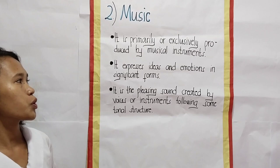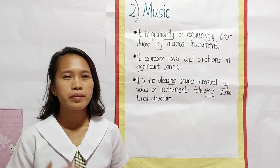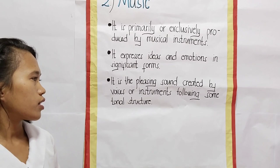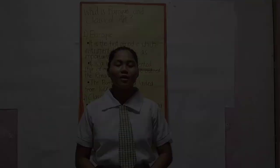Music expresses ideas and emotions in significant forms. For example, when listening to instrumental music, we can feel love, nostalgia, hate, or energy. It is piecing together sounds created by voice or instrument following some tonal structure. In instruments, we have timbre — that refers to the unique sound or quality of an instrument.